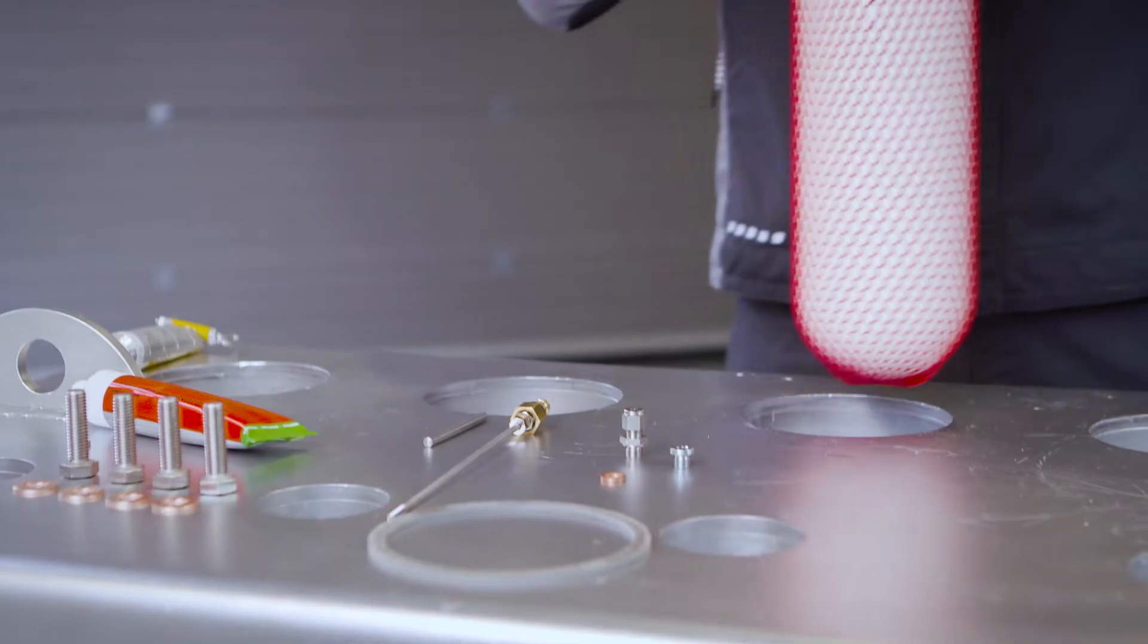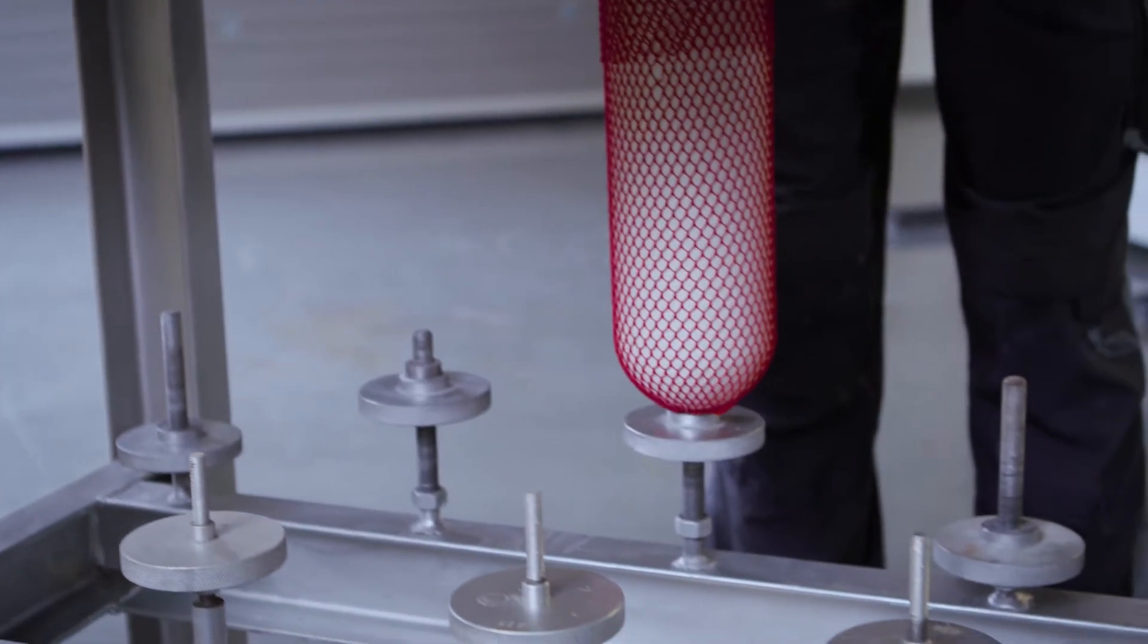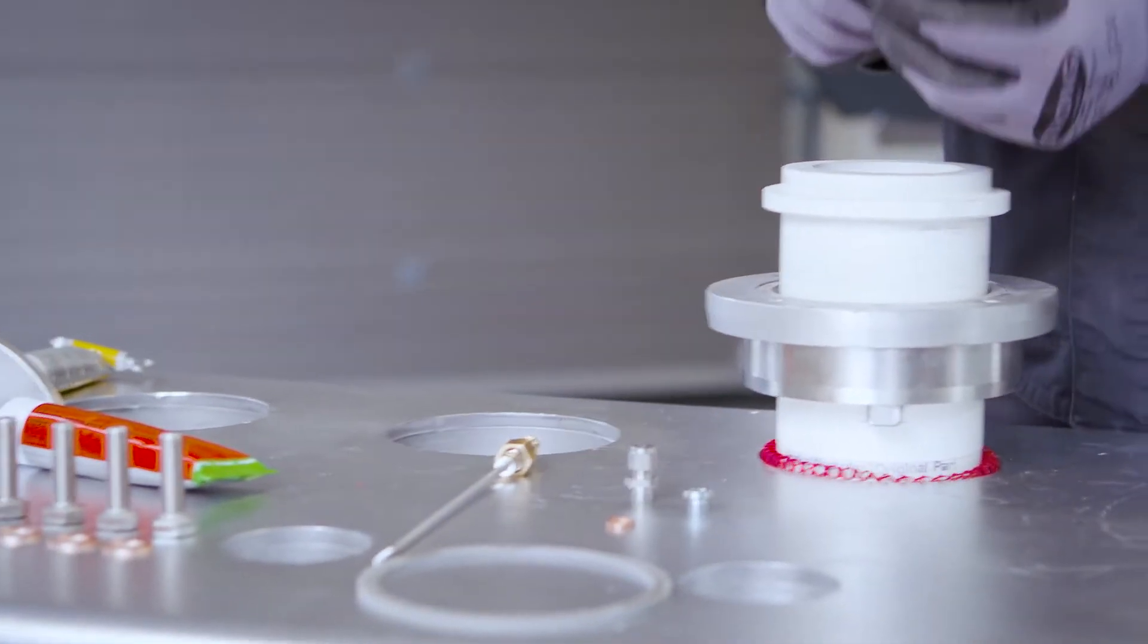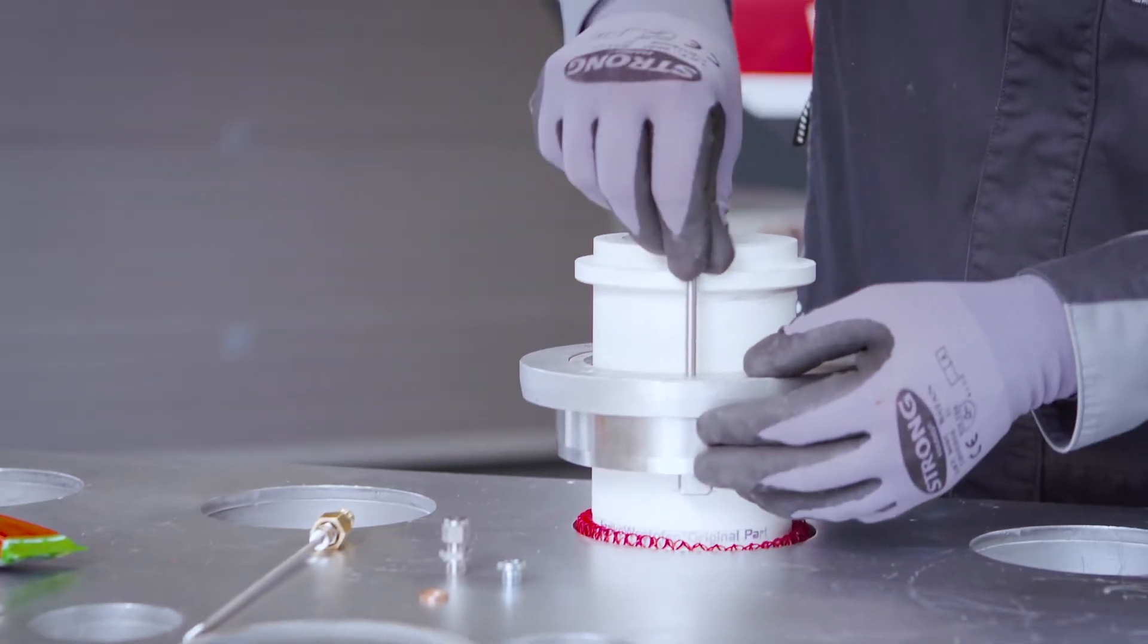Next, you spin the riser tube and place it in the provided device. With the alignment pin, you ensure that the steel components are positioned exactly one above the other.